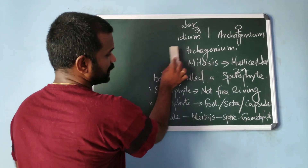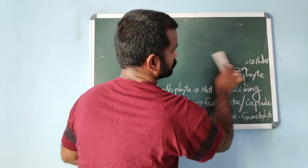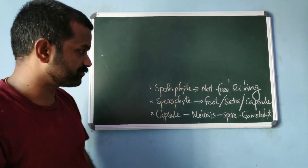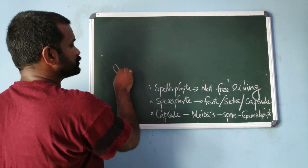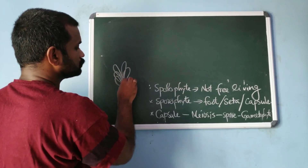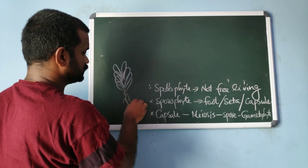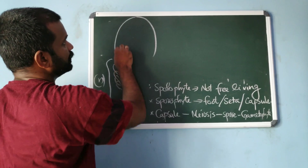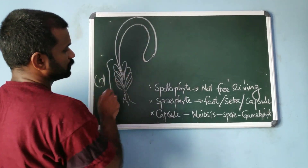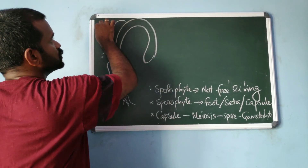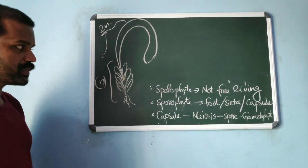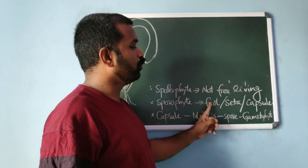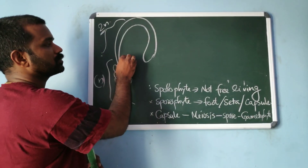This sporophyte is not free-living; it is attached on the gametophyte. The sporophytic plant body is differentiated into three parts: foot, seta, and capsule.